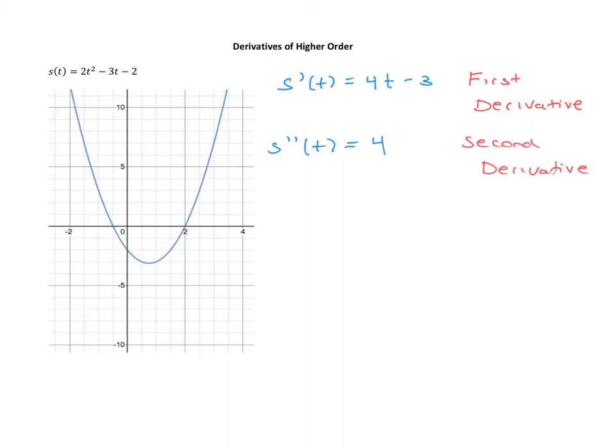You could keep going. There's a third, fourth, fifth derivative, and so on. But if we took the derivative of this function, the third derivative would just be 0. It would be 0 thereafter. So I'll just end the process here.